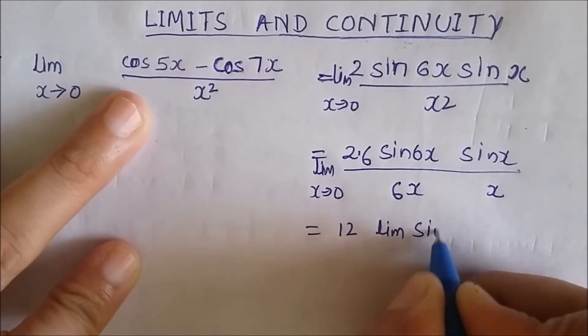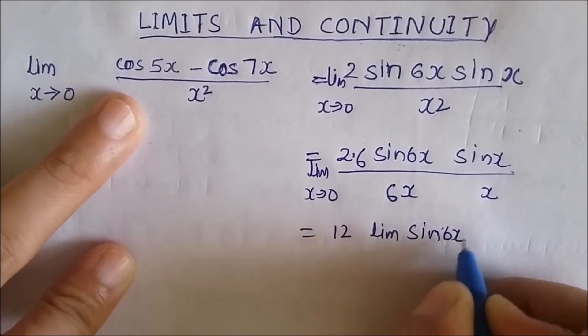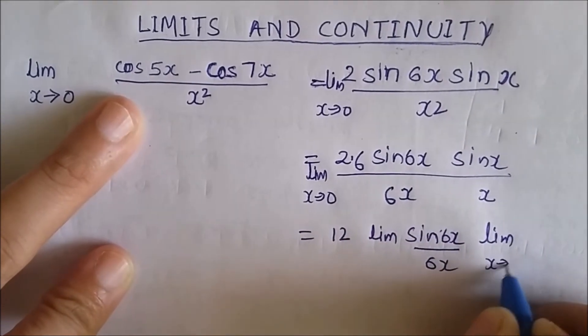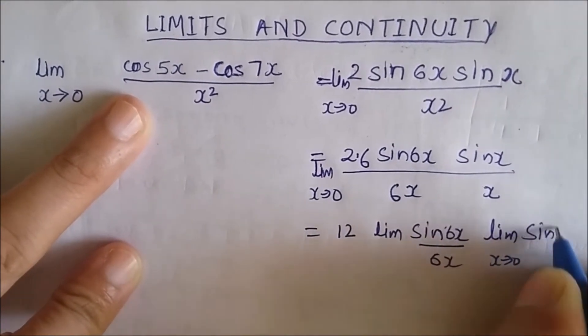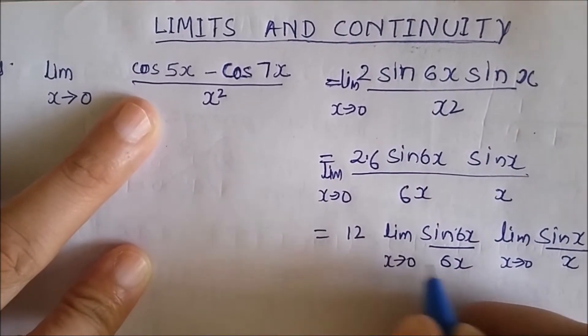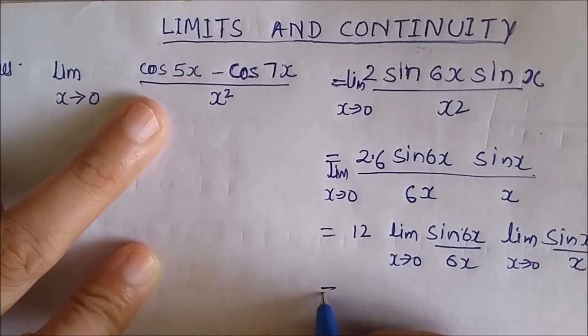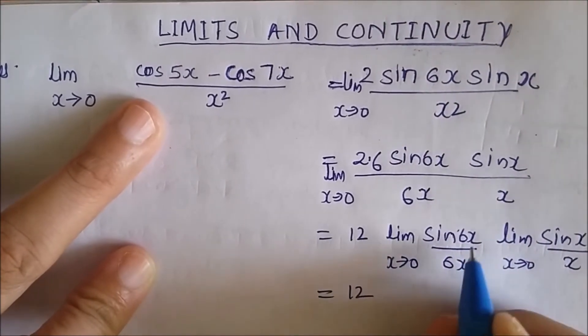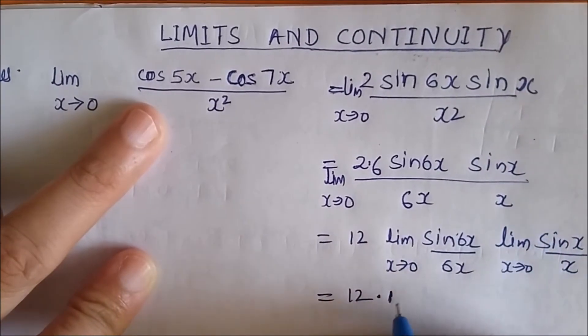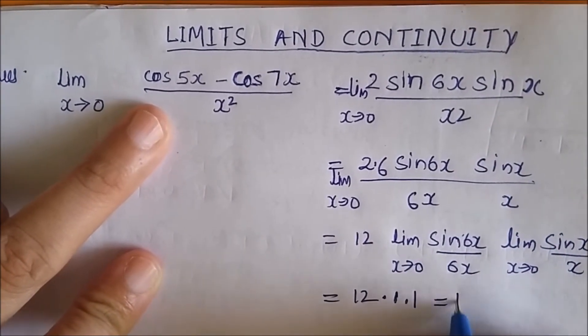sin 6x over 6x, here also x, here also x tends to 0. So at this point I will apply the limits. This is 12, this limit reduces to 1, this limit reduces to 1, so answer of this question is 12. This is the general method of doing. For this you have to remember the trigonometric formulas.